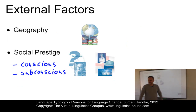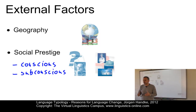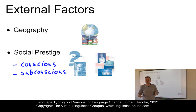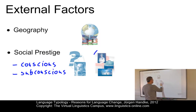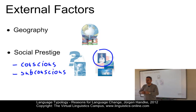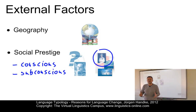Subconscious change is less noticeable but more common. Such changes may be towards a favored accent or dialect which has high prestige, or away from what is considered not prestigious. For example, in British English, RP — the type of English used by the upper class — has a high prestige scientifically, but a relatively low prestige among ordinary people.